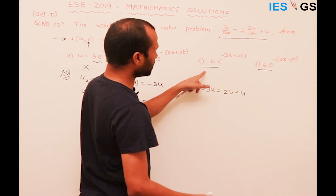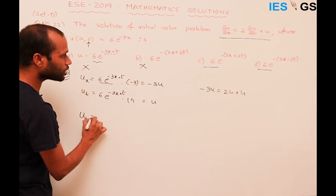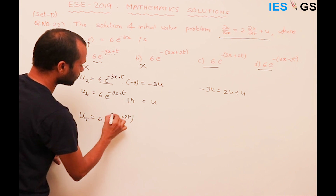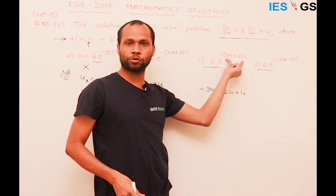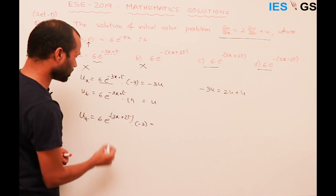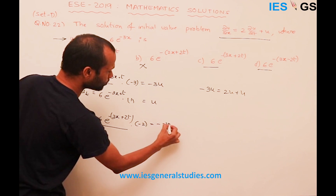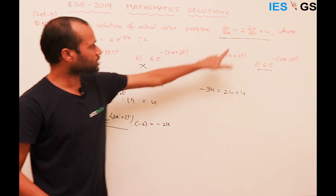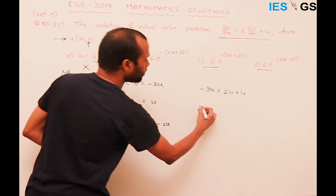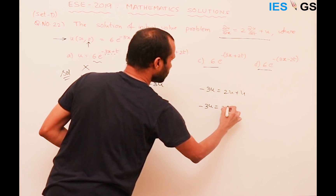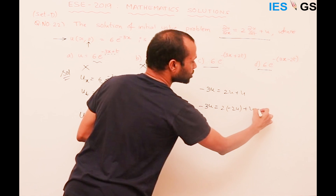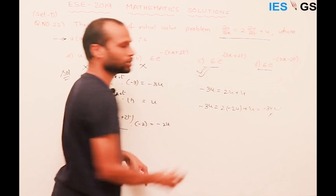Moving to option C: ∂u/∂t = 6 · e^(−3x + 2t) · (differentiate with respect to t) = 6 · e^(−3x + 2t) · (−2) = −2u. Substituting into the PDE: −3u = 2(−2u) + u = −4u + u = −3u. This is satisfied, so the answer is C.